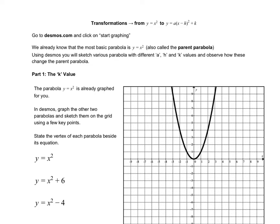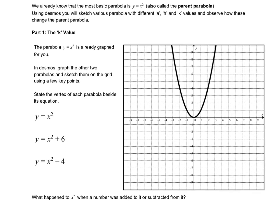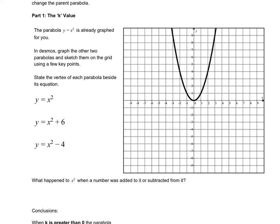So we're going to use Desmos to investigate this. Part one, we're going to look at the k value. So x squared is already graphed for you, and what I want you to do is go into Desmos and graph the other two parabolas: x squared plus 6 and x squared minus 4. Sketch them on the grid roughly, make your own observations, then come back to the video.